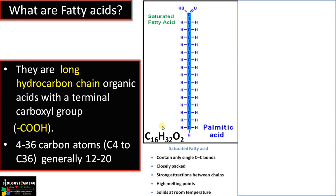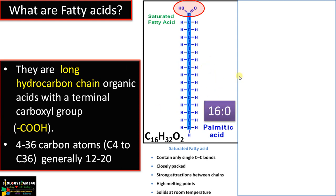What are fatty acids? Fatty acids are long-chain hydrocarbons — carbon and hydrogen bonded with a carboxyl group (COOH) at one end. This is a saturated fatty acid called palmitic acid, where the carbon number is 16: C16H32O2. Normally the number of carbons ranges from 4 to 36, often between 12 to 20. This is a saturated fatty acid as it contains only single bonds between carbons, denoted as 16:0, indicating 16 carbon atoms and no double bonds.